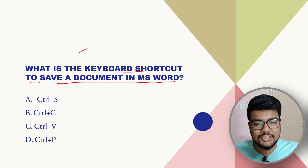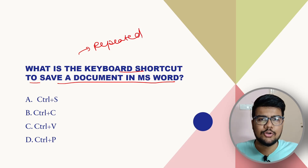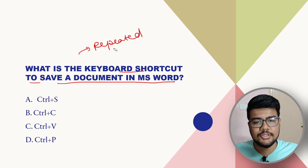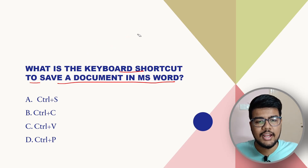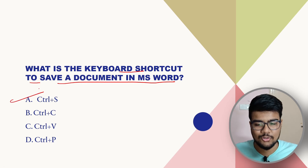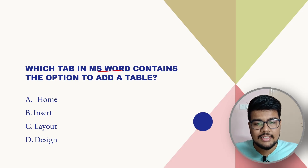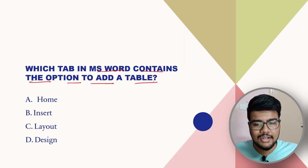What is the keyboard shortcut to save a document in MS Word? This is a very easy and frequently repeated question — the answer is Ctrl+S. Now, which tab in MS Word contains the option to add a table? The options are Home, Insert, Layout, and Design. The answer is Insert.